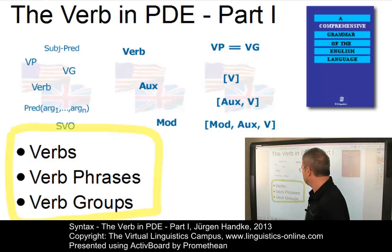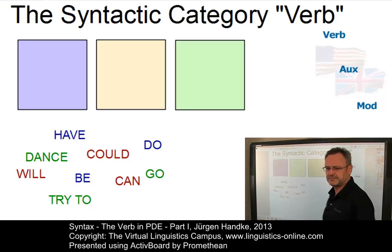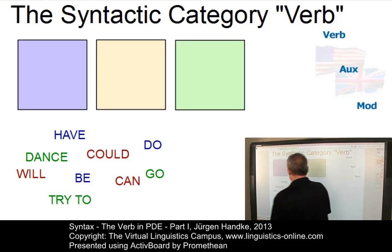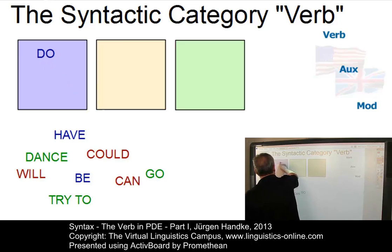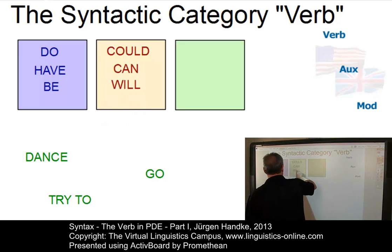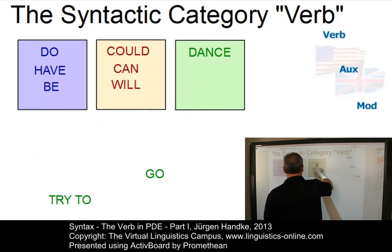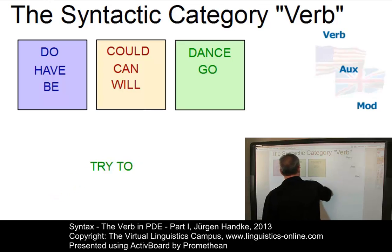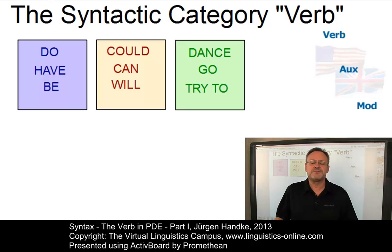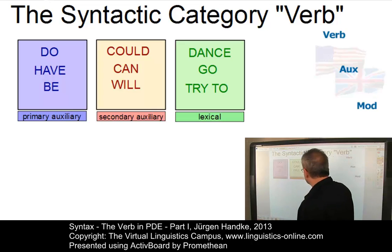Let us start with the term verb itself. As a syntactic category, the verb subsumes a number of different types. We have verbal types such as do, have, and be. We have verbs such as could, can, and will. We have verbs such as dance, go, or verbs plus particles such as try to. These different subcategories of the type verb can be labelled primary auxiliary verbs, secondary auxiliary verbs, and lexical verbs.